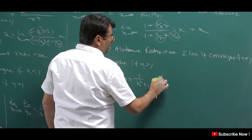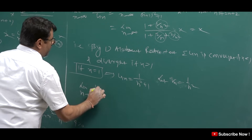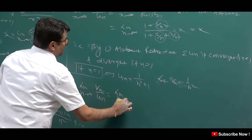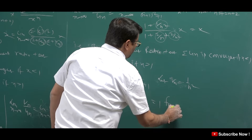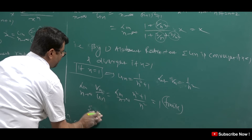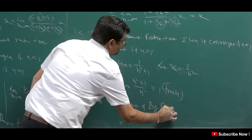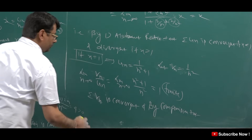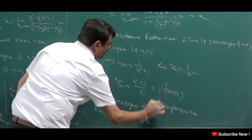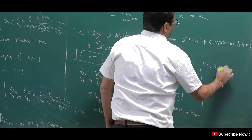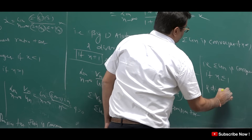If x is equal to 1, we check: where x = 1, then u_n equals 1 upon n² + 1. Let v_n equal 1 upon n². Now we compute limit n tends to infinity of v_n upon u_n, that is limit n tends to infinity: we simplify n² upon n² + 1. Here we have the value 1, which is finite and positive. Then summation v_n is convergent and by comparison test summation u_n is also convergent.